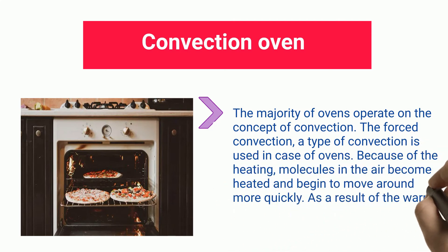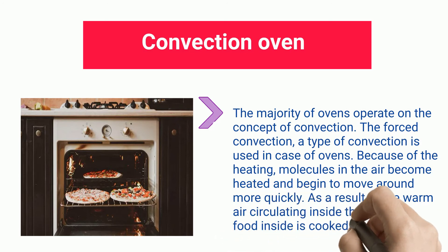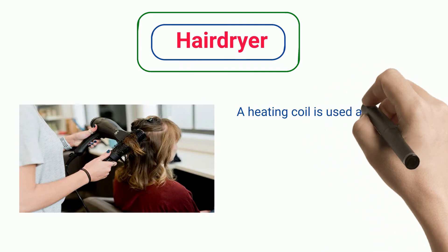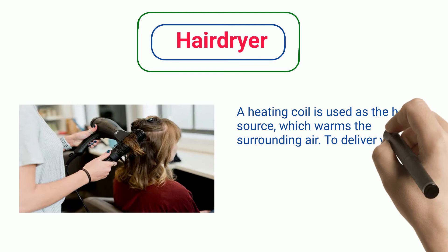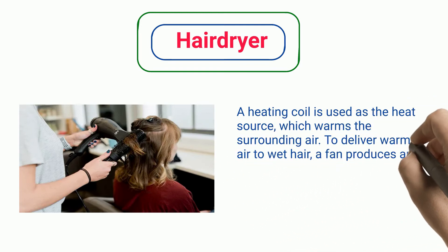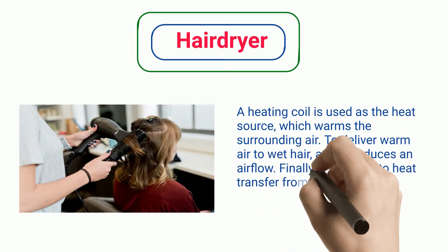Hair dryer: A heating coil is used as the heat source, which warms the surrounding air to deliver warm air to wet hair. A fan produces an airflow. Finally, it results in heat transfer from the heating coil to the hair.